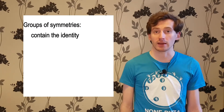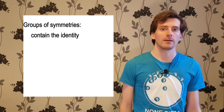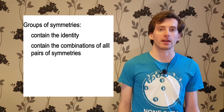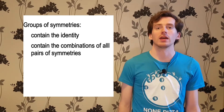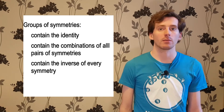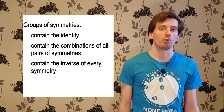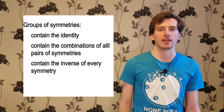The group of symmetries of a shape is simply the collection of all symmetries of that shape. All groups of symmetries share the following properties: they contain the identity, you can combine any two symmetries to get another symmetry in the collection, and every symmetry has an inverse — another symmetry which reverses its effects.